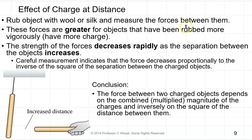If you rub an object with wool or silk and measure the forces between them, these forces are greater for objects that have been rubbed more vigorously and have more charge. The strength of the forces decreases rapidly as the separation between objects increases. Careful measurements indicate that the force decreases proportionally to the inverse of the square of the separation between the charged objects. The conclusion: the force between two charged objects depends upon the combined magnitude of the charges and inversely on the square of the distance between them.